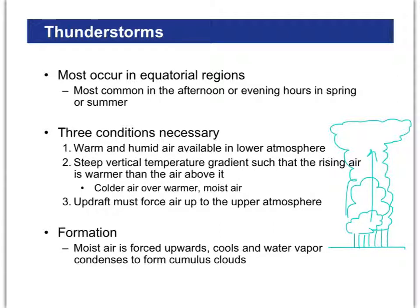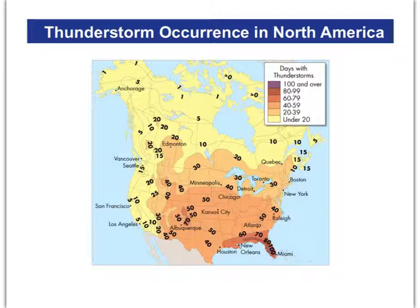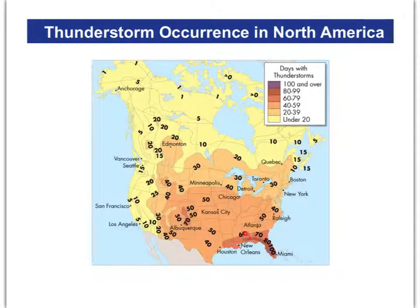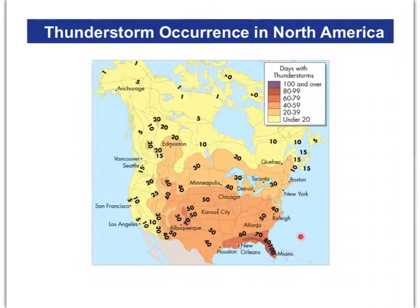Where do we see most thunderstorms in the United States? It makes sense that they take place in the south, especially in Florida. Florida is kind of a thunderstorm capital because there's plenty of moist air around it, and plenty of warmth to cause the air to rise up.